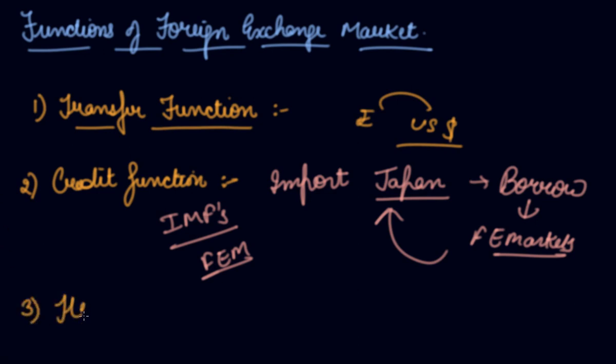Third is the hedging function. It implies protection against the risk related to variations in the foreign exchange rate. Demand for and supply of foreign exchange is committed to some commonly agreed rate of exchange, even when commitments are to be honored on future dates. This market provides you the hedging function. Hedging means reducing the risk.